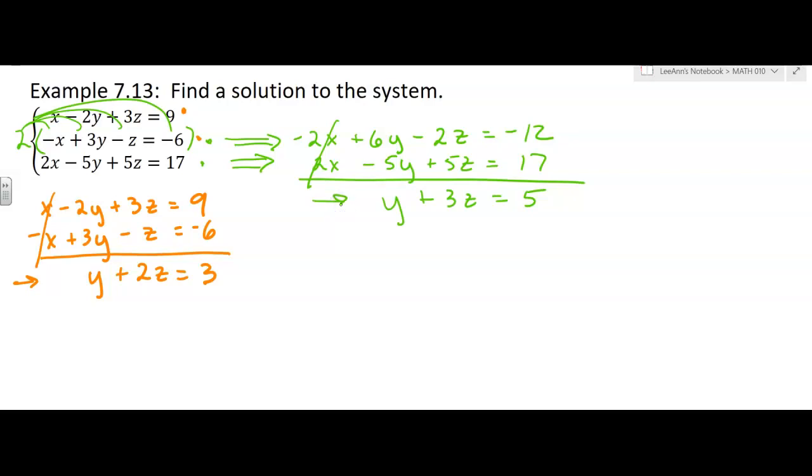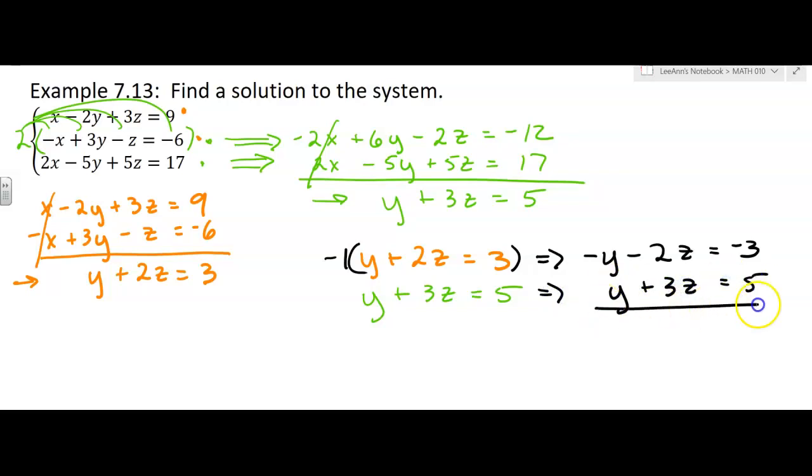So what I'm going to do is I'm going to take that orange equation and the green equation. And I'm going to work with those two, just like it's a 2 by 2 system, just like we did in 7.1. So the top equation, I'm going to multiply by negative 1. You could have chosen the bottom. I'm just choosing the top. The bottom equation, I'm just going to copy it down. So I'm adding these equations together. This is all elimination by addition is what we've been working on here. The y's cancel. I get 1z equals negative 3 and 5 is 2. And I have solved for z. Yay.